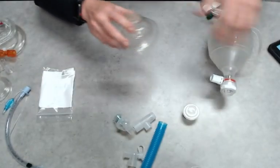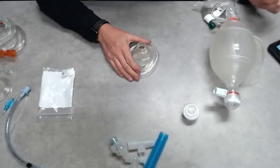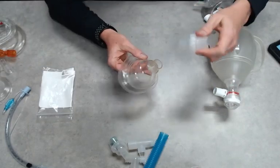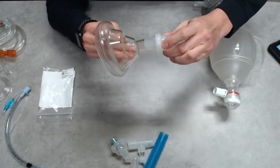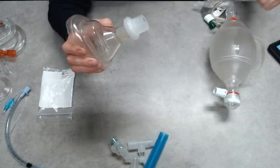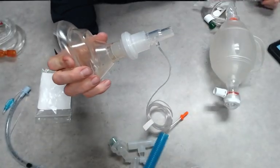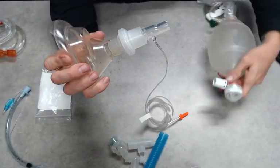So first we're going to start with our BVM mask, and then from here we're going to add our filter. Our filter will plug right into it. It's a little snug at first, but get it pressed in there. And then we're going to add our end-tidal, plugs in just like that, and then we can attach our BVM to the end of this.